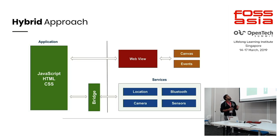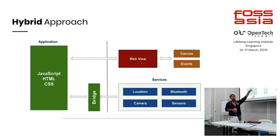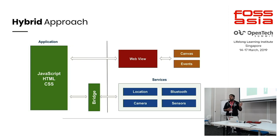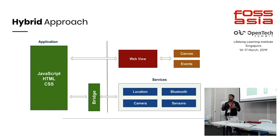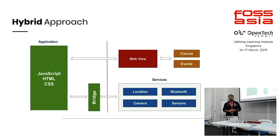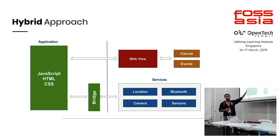Before moving to in-detail stuff, this is the very high-level architecture about the hybrid approach. Can you realize what's the difference between the previous native architecture and this one? The bridge is there. We have replaced the OEM widgets with something called WebView — this is a thing which runs in your browser. We develop an application without thinking of it as a web application; at the end of the day it's a mobile application, but we use a web view to render things. That's the only way we can communicate with the Canvas or events.